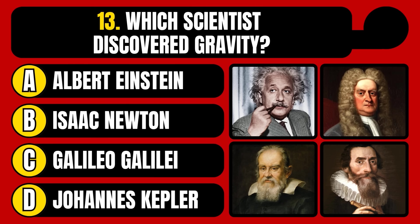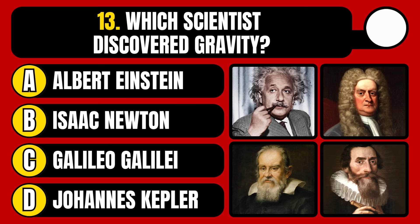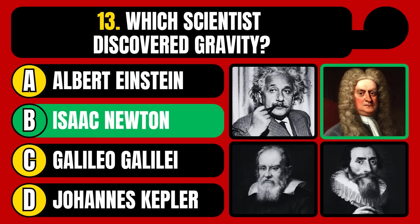Which scientist discovered gravity? Albert Einstein, Isaac Newton, Galileo Galilei, or Johannes Kepler? The correct answer is option B, Isaac Newton.